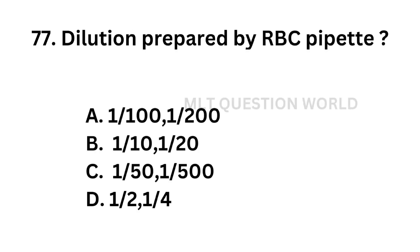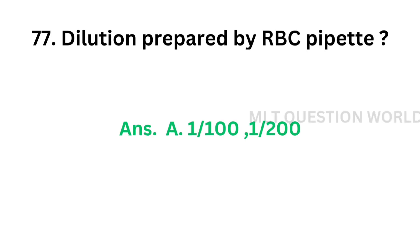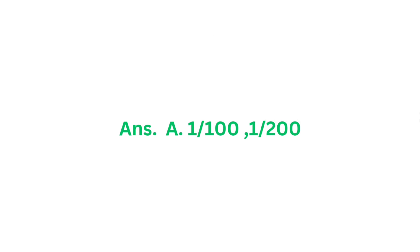Question number 77: Dilutions that can be prepared by an RBC pipette — Option A: 1 in 100 and 1 in 200, Option B: 1 in 10 and 1 in 20, Option C: 1 in 50 and 1 in 500, Option D: 1 in 2 and 1 in 4. The correct answer is Option A, 1 in 100 and 1 in 200.